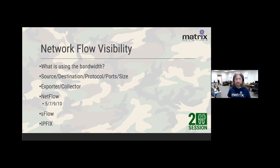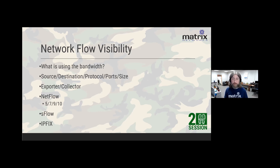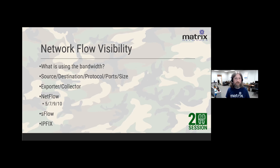SNMP, CLI, and APIs give us metrics, counters, and configuration data. They can tell me that 700 megabits is flowing across two interfaces, but they do not tell me what that data is or who's talking — it's purely a counter. To answer what's actually going across my network and what's actually using the bandwidth, we need to look at network flows. A network flow is any communication between endpoints — for TCP, once we see the three-way handshake complete (SYN, SYN-ACK, ACK), we know we have a flow. UDP is more difficult since it's connectionless, but two ports talking for a certain amount of time constitutes a flow.